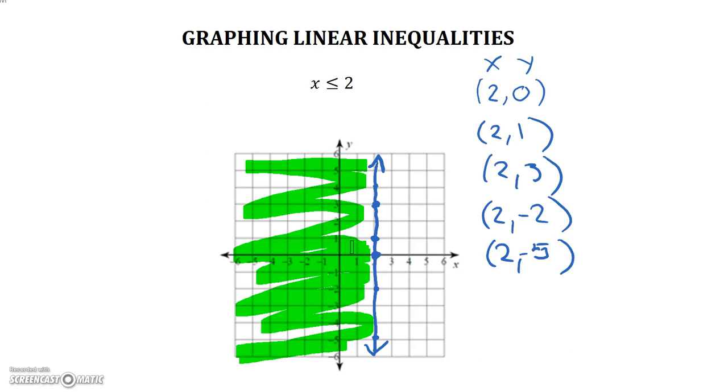Or we can go back to our way and test a point. Again, let's test 0, 0 and plug it in for x. 0 is less than or equal to 2. That's a true statement. So wherever the 0, 0 is, that's included in our solution. Because 0, 0 is part of the shaded area, so we know we're correct.